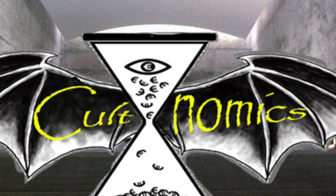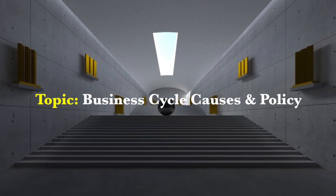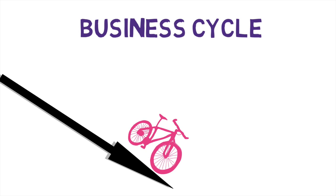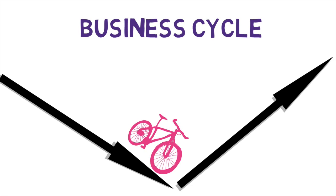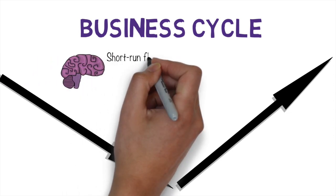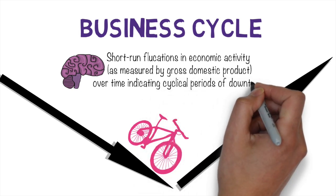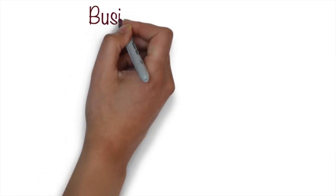Hi guys and welcome to Cultnomics. My name is Paul Hanley and today I'm going to be chatting to you about an introduction to the business cycle. A business cycle is a basic concept in macroeconomics which tries to explain how output in the economy falls at some times and increases at others — how it fluctuates or cycles over time. The definition of a business cycle is short-run fluctuations in economic activity, meaning gross domestic product or output in the economy, indicating cyclical periods of downturns and upturns.